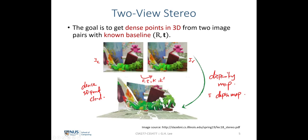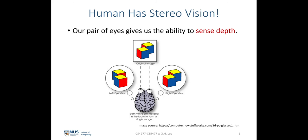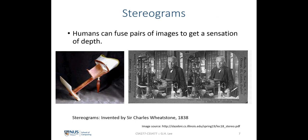Stereo vision plays a very important part in most biological life systems. It is especially important for human evolution: given a pair of eyes, we are able to sense depth in the 3D environment, which gives us the ability to navigate safely and avoid injury. Stereo vision is also used for recreation — as early as 1833, the stereogram was invented by Sir Charles Wheatstone.